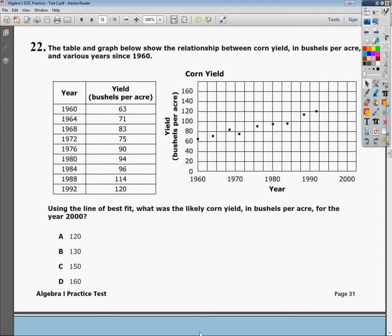They want to know, using a line of best fit—the issue here is that it's a line of best fit, which means it's linear—what was the likely corn yield in bushels per acre for the year 2000. There's a couple ways you can go about doing this. They were nice enough to graph it for you, so theoretically...